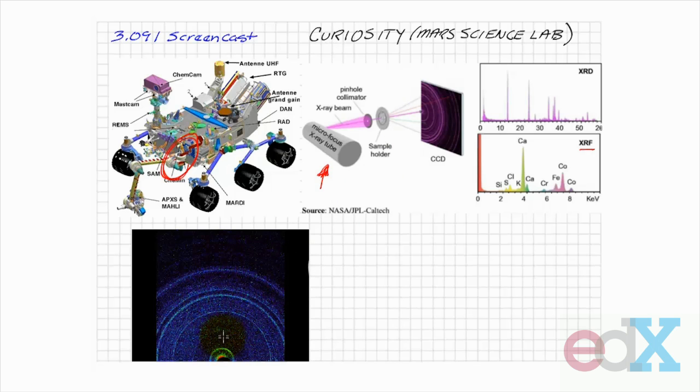By measuring the intensity as a function of position on this screen, we can obtain this diffraction pattern that's shown up here. You see the intensity on the screen as a function of 2 theta here.